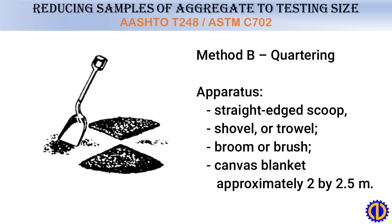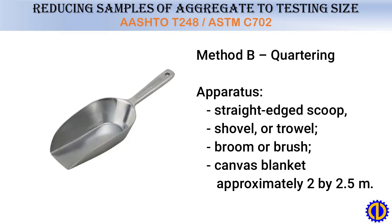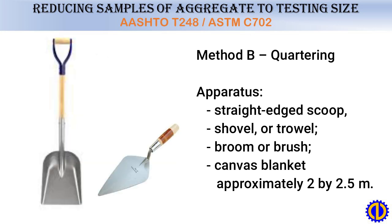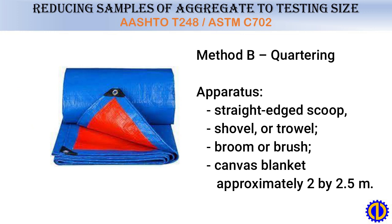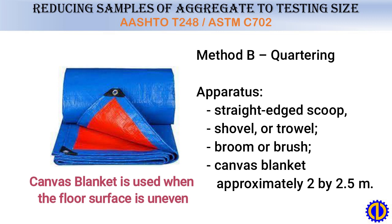Method B: Quartering. Apparatus required includes a straight-edged scoop, shovel, or trowel, a broom or brush, and a canvas blanket approximately 2 by 2.5 meters (6 by 8 feet). The canvas blanket is used when the floor surface is uneven.